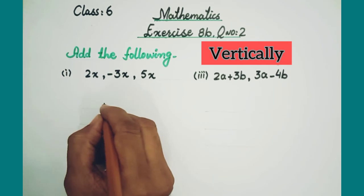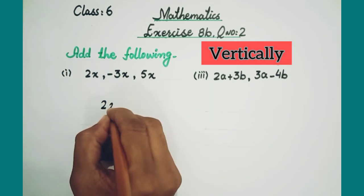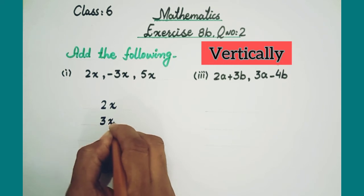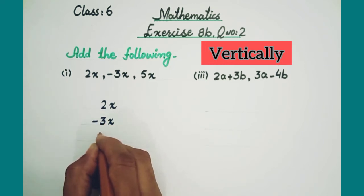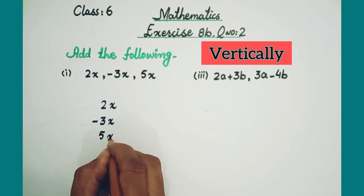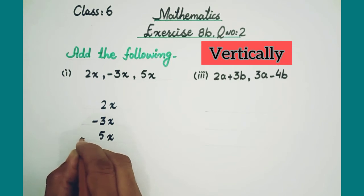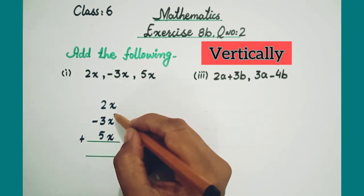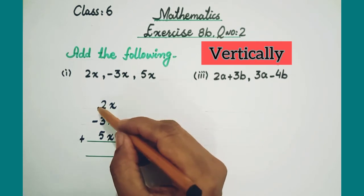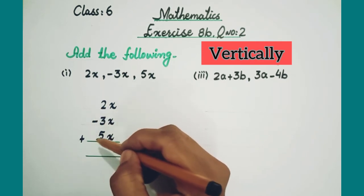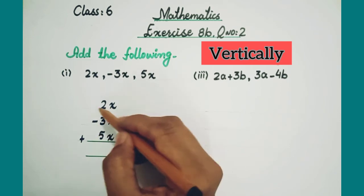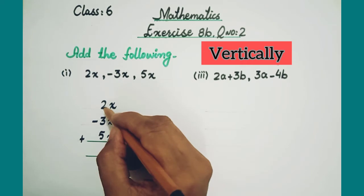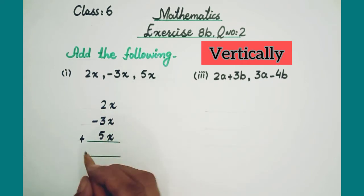Firstly, write 2x, then write 3x and put the sign of minus, then write 5x and put the sign of addition. We always add like terms — same variables. 5 and 2 are both positive, so we add them: 7x. Then 7x minus 3x gives us 4x.